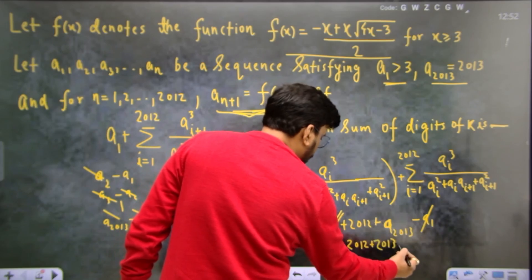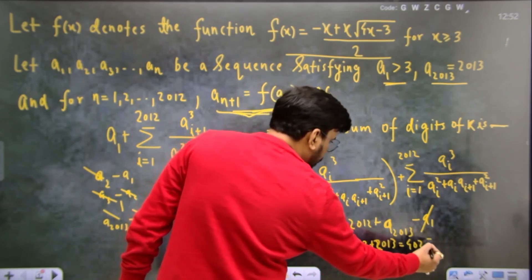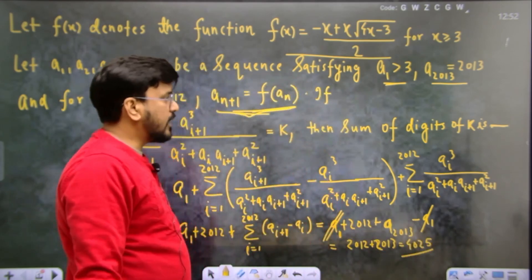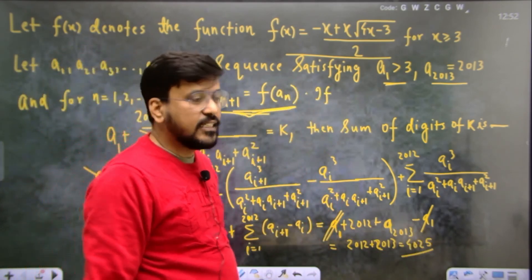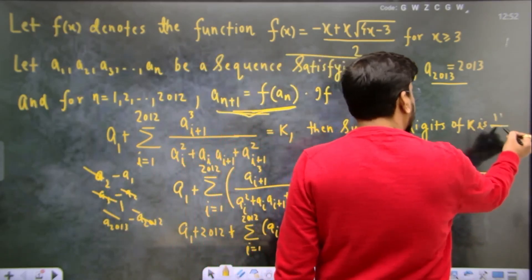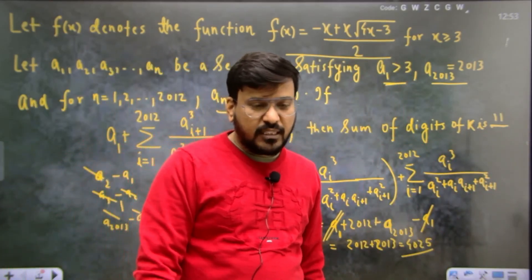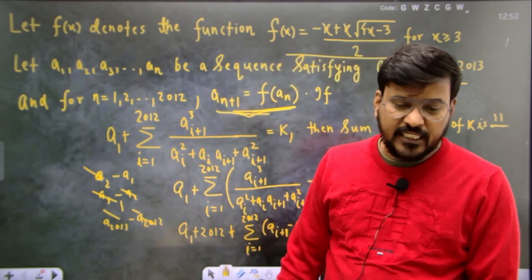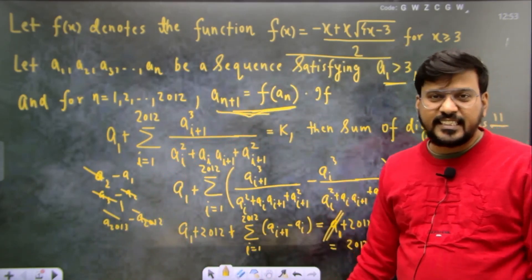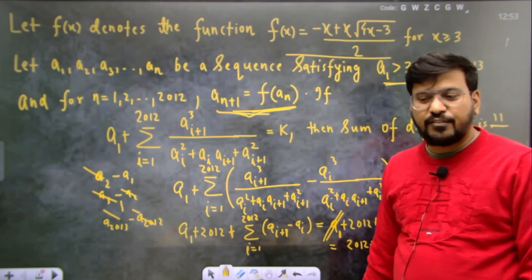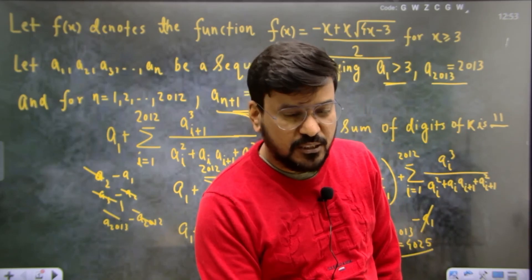So this is going to be 4025. And if the sum of digits of k is asked, then 4+0+2+5 = 11. So definitely write in the comment box how you found this particular question, how did you proceed, whether you solved it or not, and how far you got. If you enjoyed it, let me know in the comment box. Thank you very much.